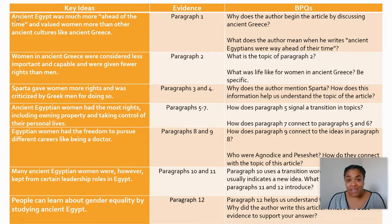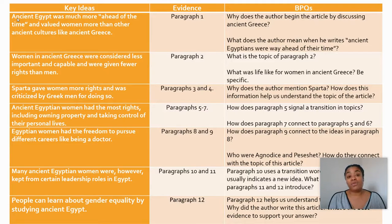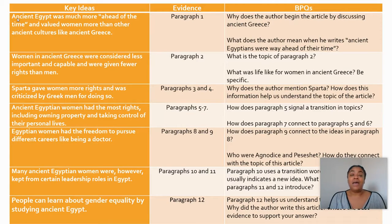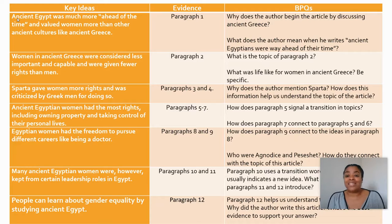Paragraphs five and seven, we see that ancient Egyptian women had the most rights, including owning property and taking control of their personal lives. We start to see things change in paragraphs eight and nine because Egyptian women had the freedom to pursue different careers like being a doctor. Then in paragraphs ten and eleven, many ancient Egyptian women, however, were kept from having certain leadership roles. And then to end, paragraph twelve talked about the why.